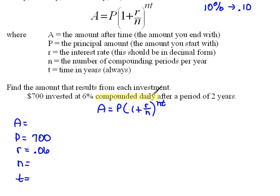Compounded daily refers to n, the number of compounding periods per year. There are 365 days in a year, so our n would be 365.